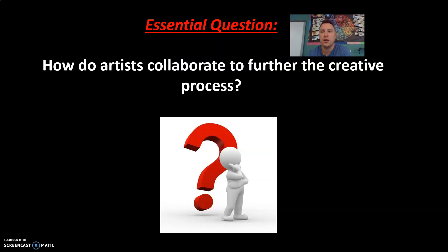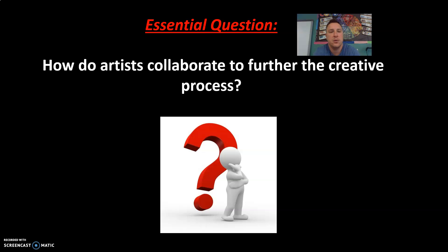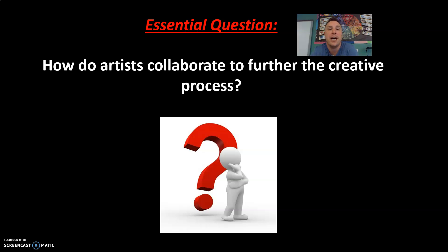Going to our central question: how do artists collaborate to further the creative process? We talked about this earlier in lesson one. This is your final essential question for this unit because you should have received feedback from your peers during your lesson two submission, and their criticisms were supposed to help guide you in refining and finishing your sculpture. As far as collaborating to further the creative process, you're taking feedback from others and making revisions based on that feedback. That furthers your creative process because you're making changes you may not have made otherwise and getting new insights — they might be seeing something you didn't, or giving a suggestion about what could be added.